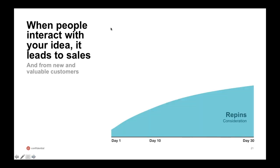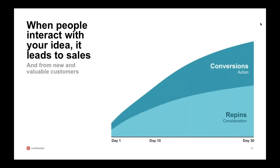Advertisers often see significant earned activity over time from the organic effects of downstream saves on promoted pins. For example, if Michelle sees your promoted pin and saves it, then I see her save in my feed, click through, and make a purchase — we'll report that conversion to you. This results in a drastic decrease in total CPA from cumulative conversions over time. We recommend advertisers look at a longer attribution window on Pinterest to see the full effects. If you give people time to share your ideas, you will see your CPAs drop.